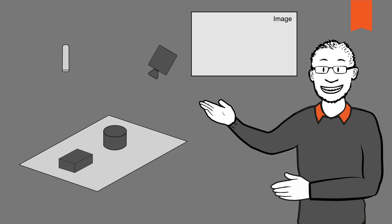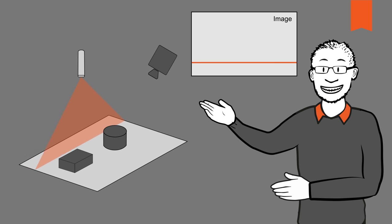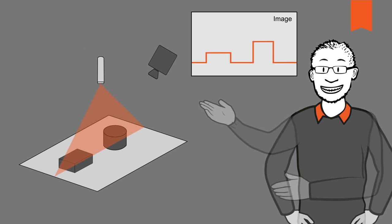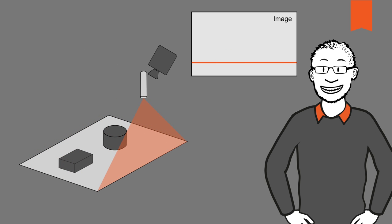Scanning techniques use a projected line of light onto a surface. A standard 2D camera captures many images of just the line while the object, camera, or light is in motion. Other techniques like stereo, structured light, and time of flight don't require scanning.